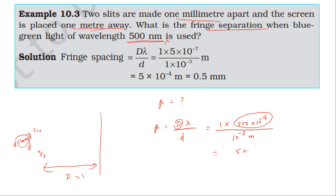equals 5 times 10^-7 meter divided by 10^-3. This gives us 5 times 10^-4 meter.